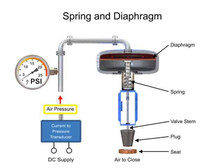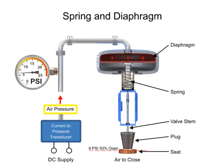For example, a pressure of 9 PSI applied to the diaphragm moves the spring and valve stem to 50% of operating range.